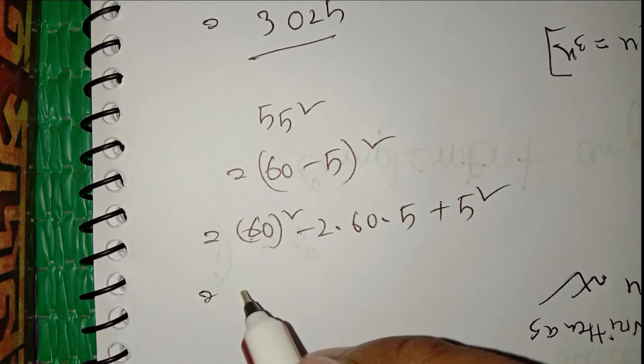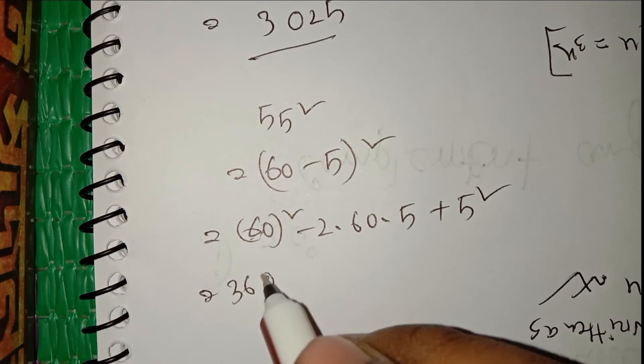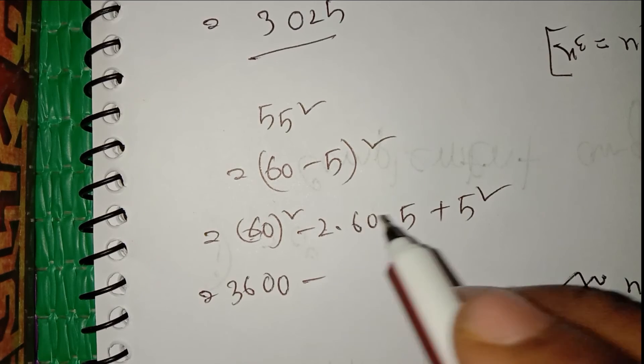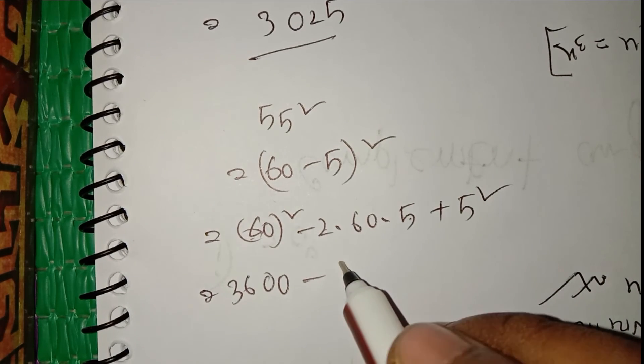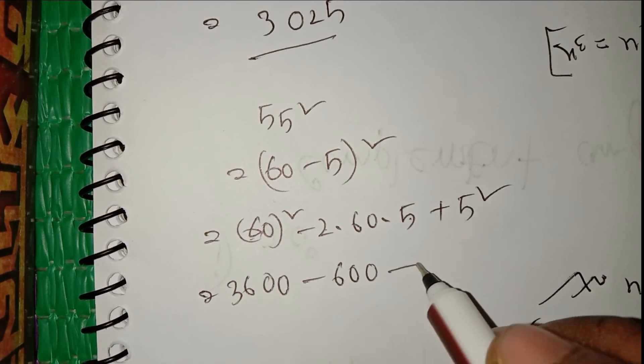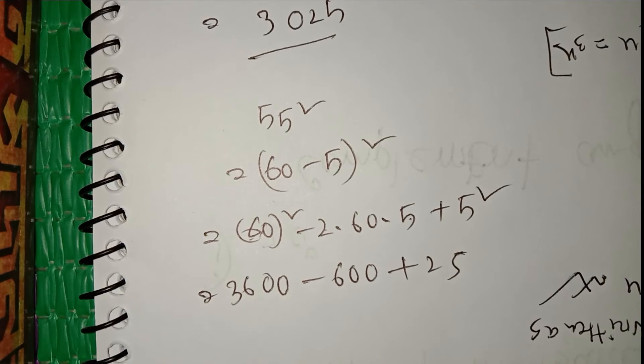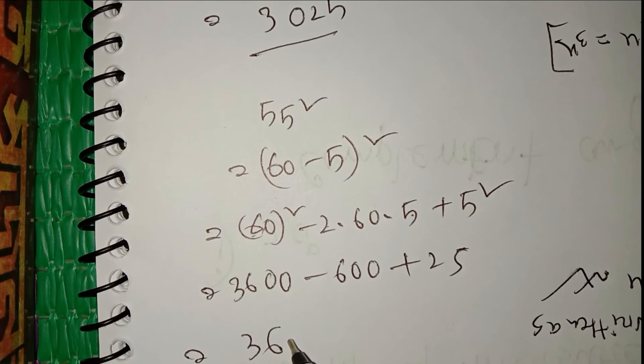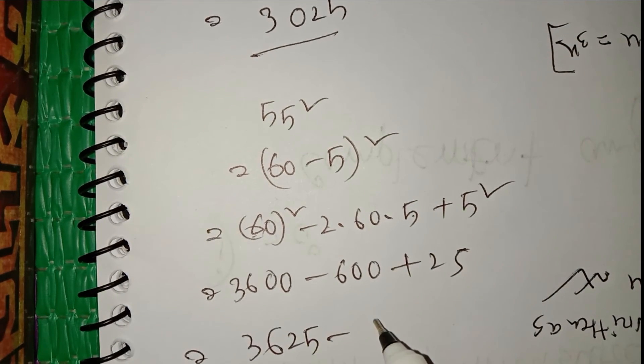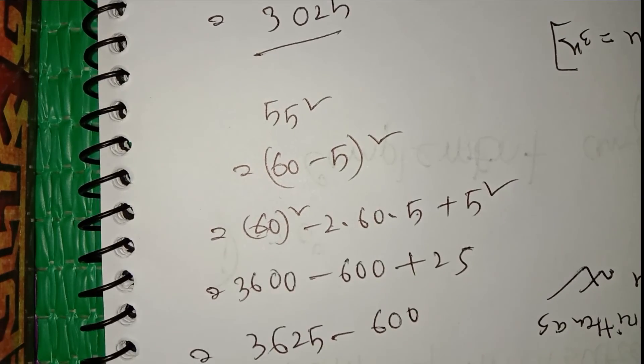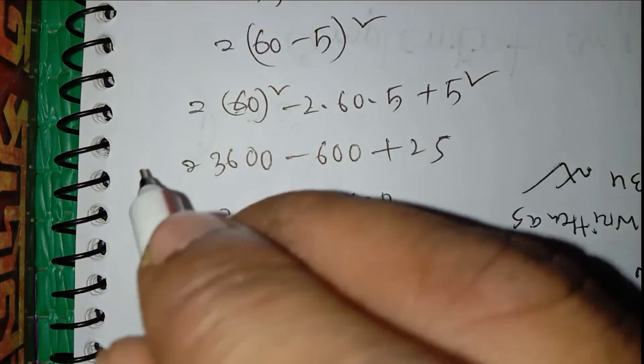6 times 6 is 36, 3,600. 5 times 10 equals 600. So here is 3,600 plus 25 equals 3,625. Now subtract 600.